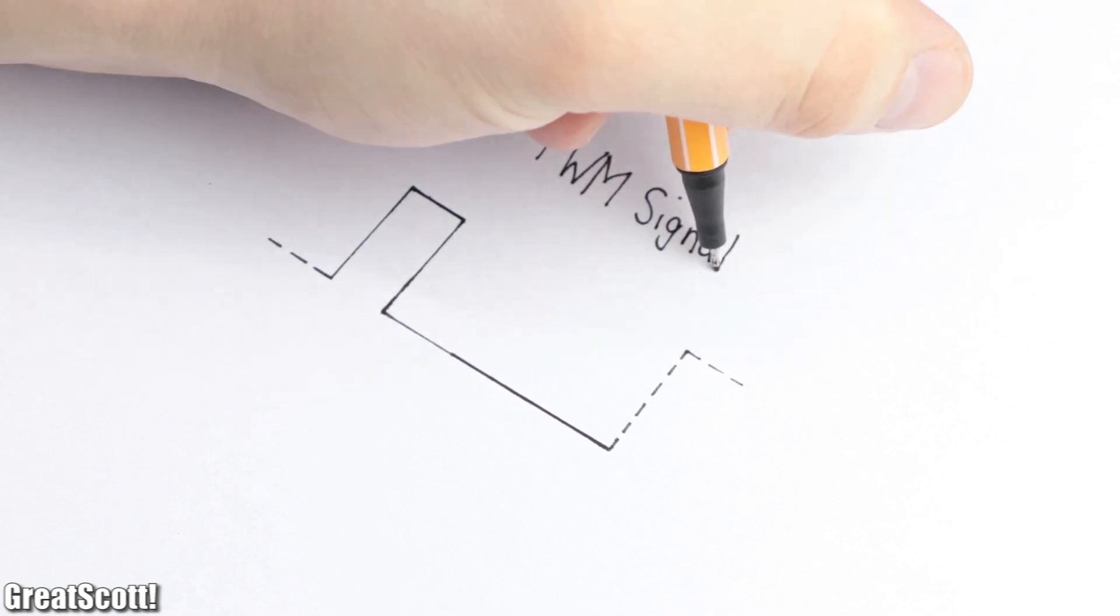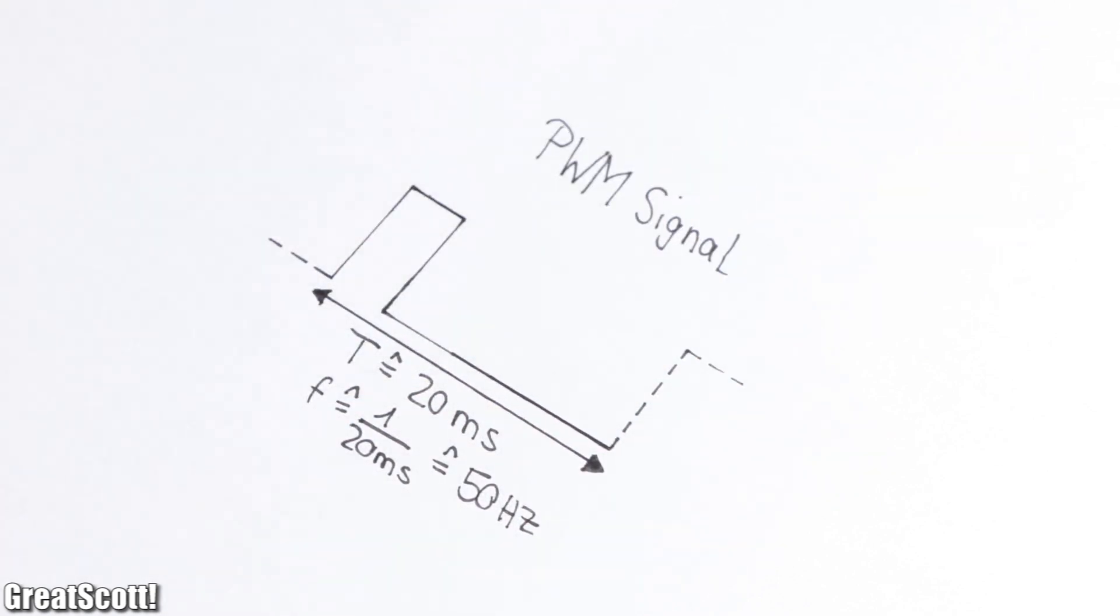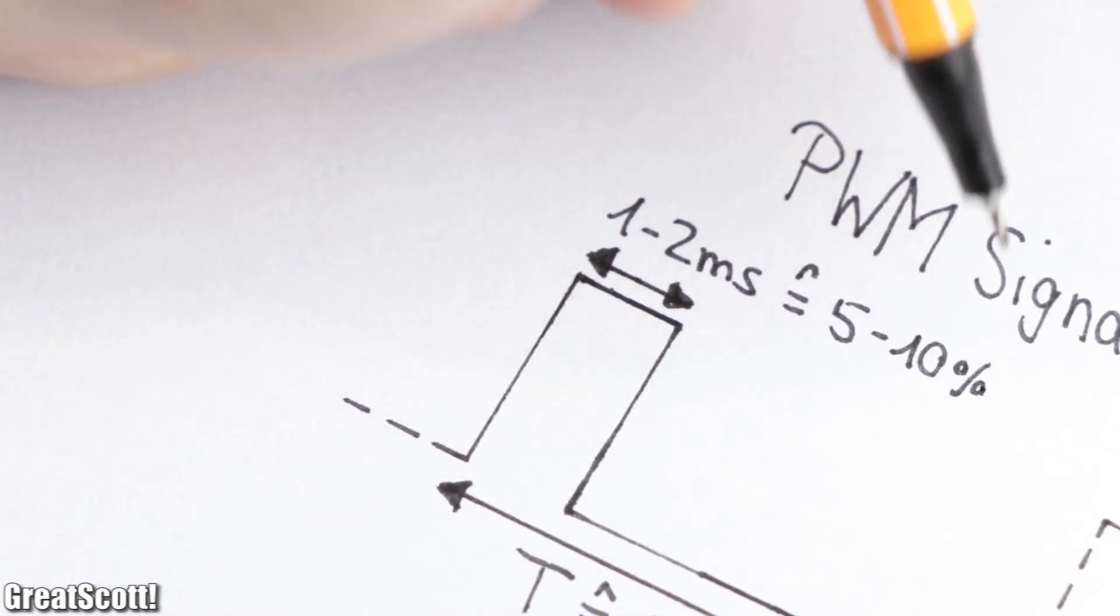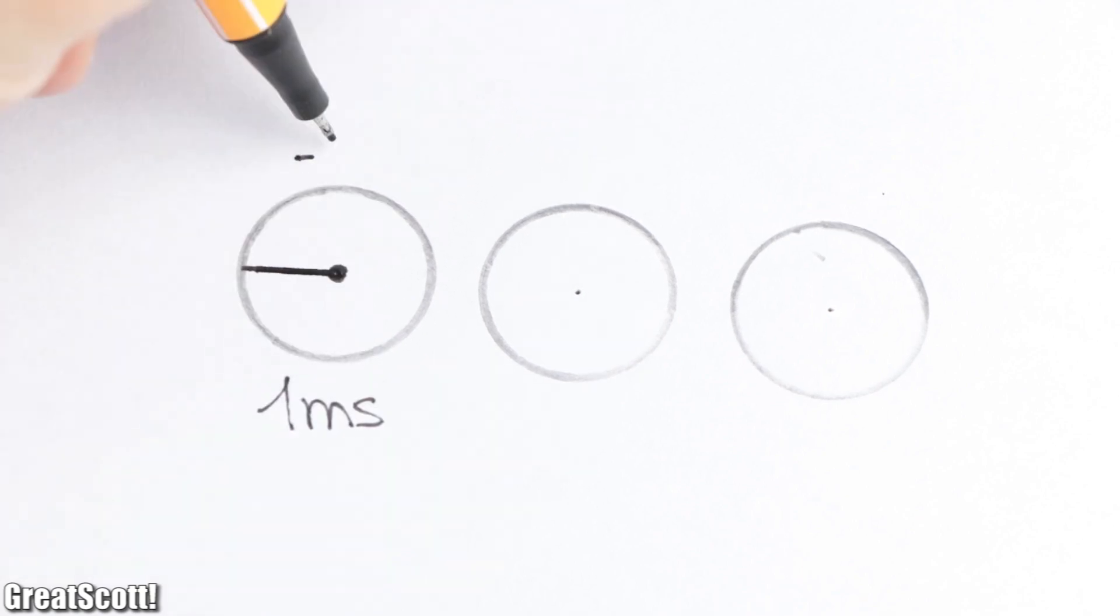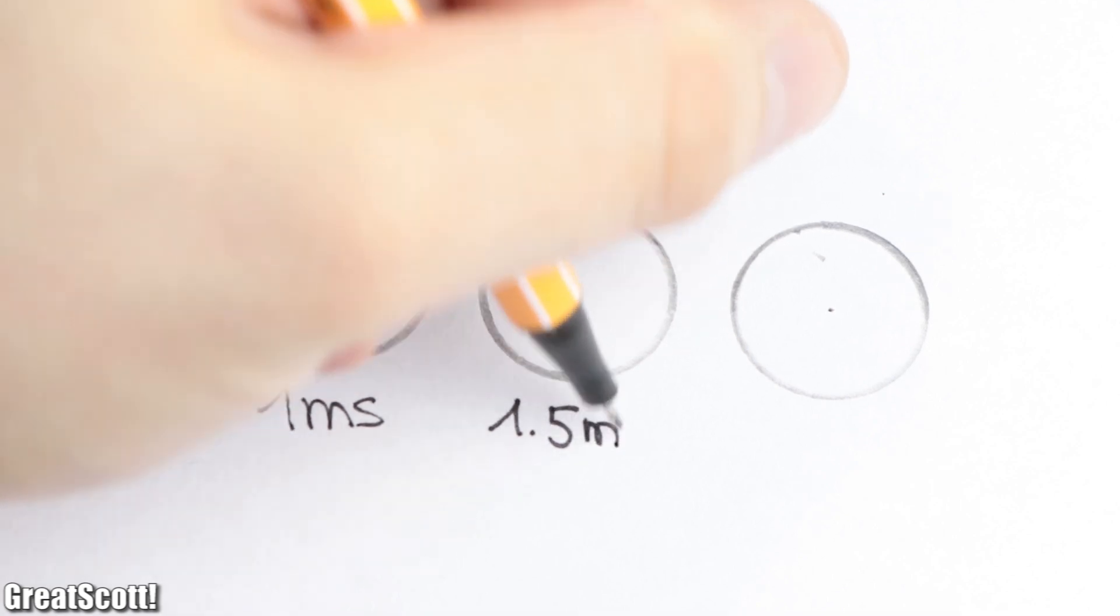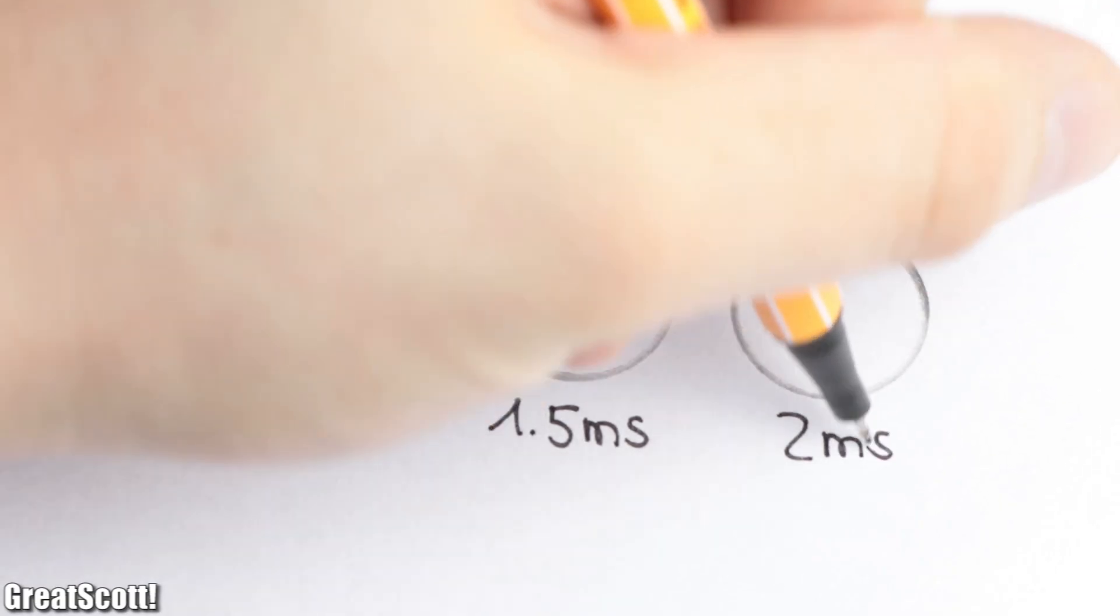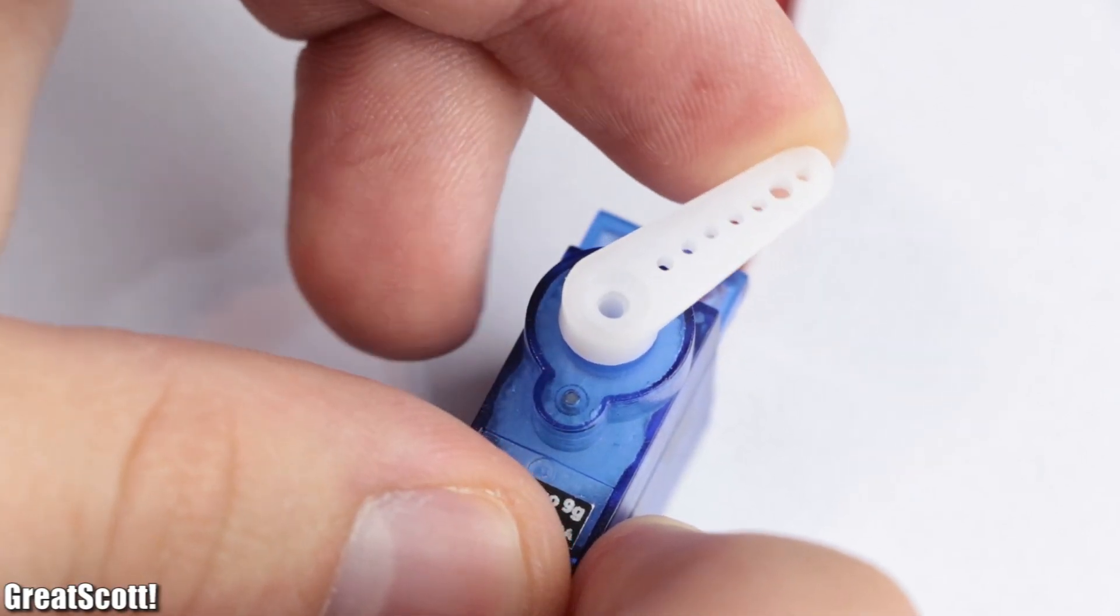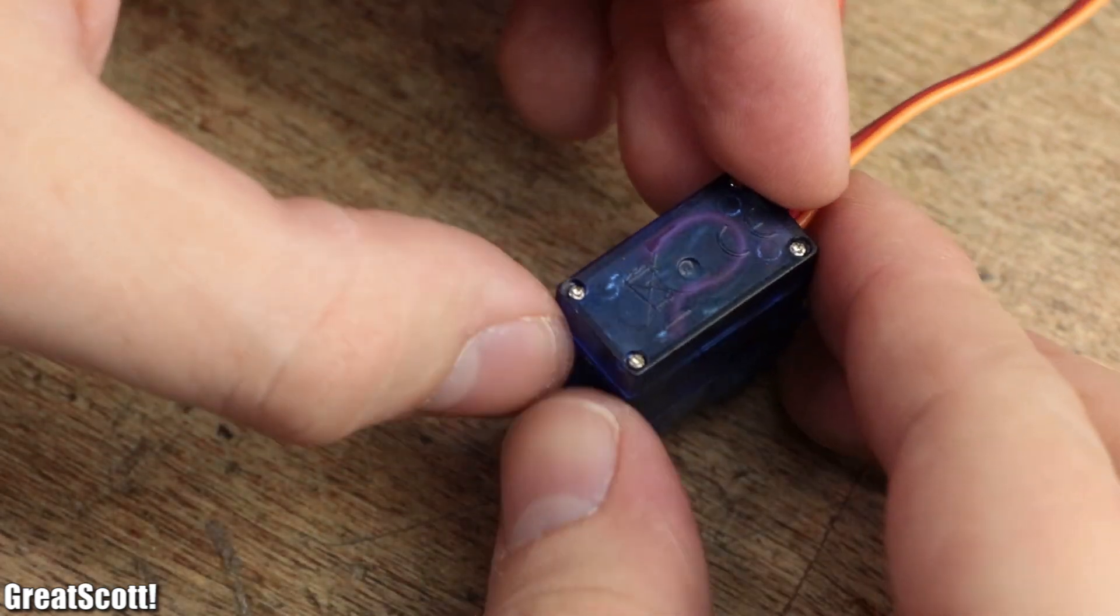The control signal needs to be a PWM signal with a periodic time of 20 milliseconds, aka 50 Hertz, and a duty cycle of 1 to 2 milliseconds, so 5 to 10 percent. An on time of 1 millisecond represents the minus 90 degrees position of the motor shaft, 1.5 milliseconds represent the 0 degree position, and 2 milliseconds the plus 90 degrees position. So we can rotate the shaft a total of 180 degrees.